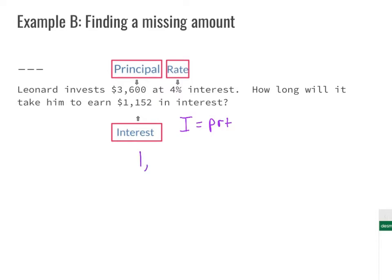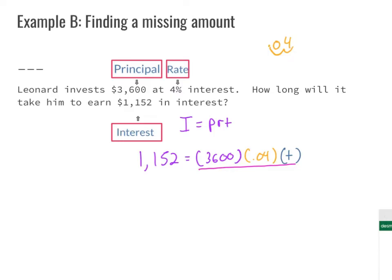Writing our formula: I = P × R × T. We substitute in our interest as $1,152. Our principal is $3,600. Our rate is 4%, which we convert to a decimal by moving two places to the left, giving us 0.04. We don't know our time, so we leave that as the variable T. To solve this we'll need our equation-solving skills.